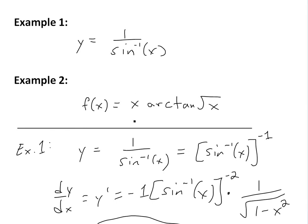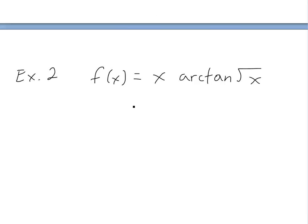So now let's look at example 2 right here. I'll write it down here. So this example 2, f(x) equals x times arctan of square root of x. So remember, arctan is the same thing as inverse tan of x. This just means basically tan inverse.